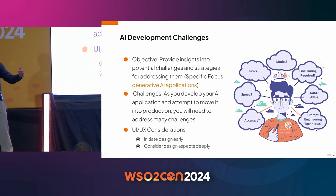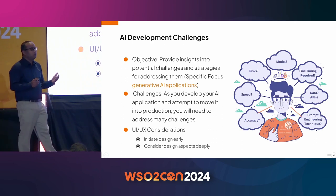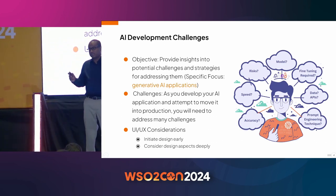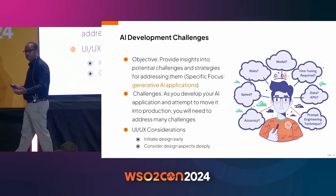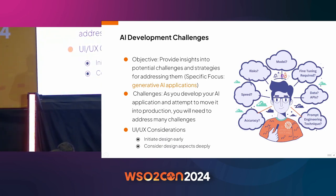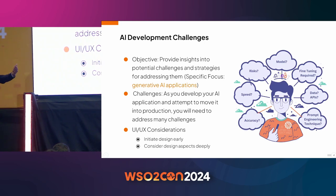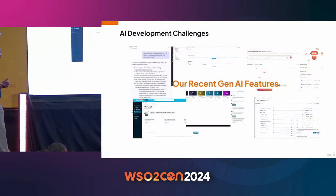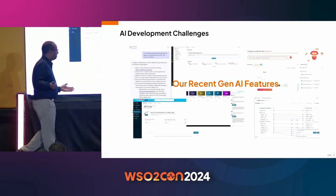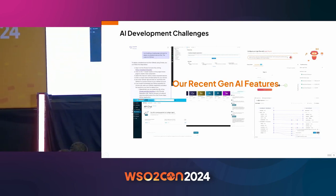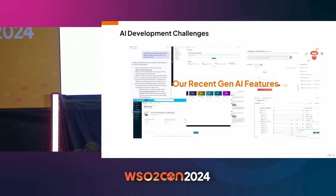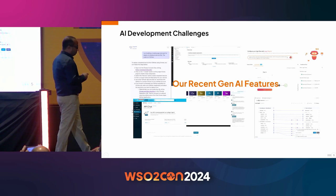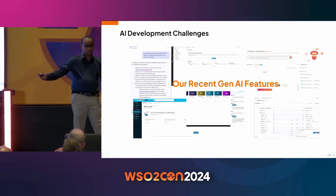Sometimes what you can do is build a prototype. Even if you don't have your backend services or data ready, you can have mock backends and mock APIs, build a prototype, show it to people, and get their feedback. For WSO2Con, we have released seven features. For Choreo, we have released Choreo Copilot — a very powerful feature, all currently in preview.